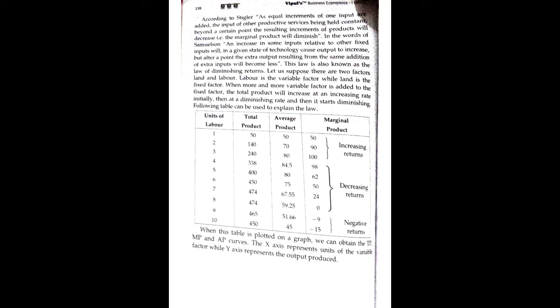Eventually the total product reaches its maximum and the marginal product becomes negative, such as minus 9, indicating the onset of stage three.